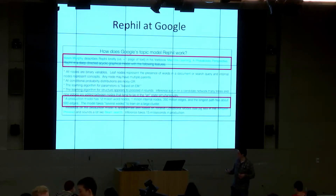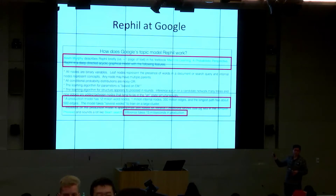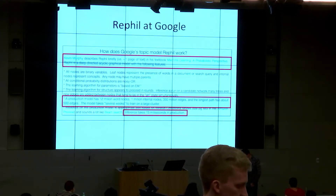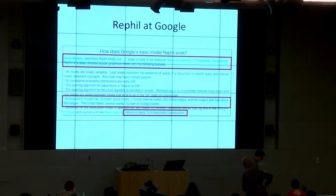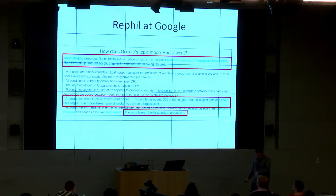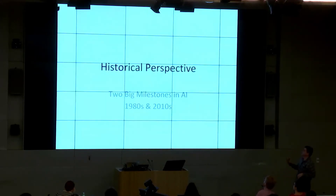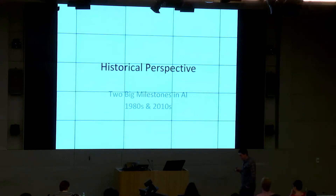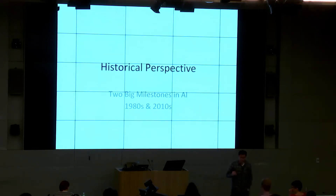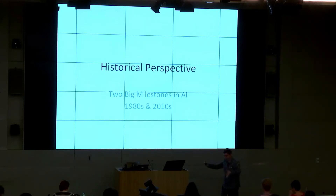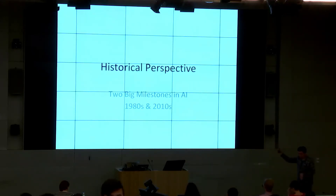Interestingly, because of the nature of that application, inference happens in milliseconds. We'll know a lot about Bayesian networks — their syntax, semantics, inference, and applications — later. But now let me share a historical perspective on what's been going on in AI. I'll particularly highlight two big milestones. The first is from the 80s, which led to the introduction of a whole set of techniques in AI, including what we'll discuss in this course. The second is the current milestone we're going through now with deep learning.